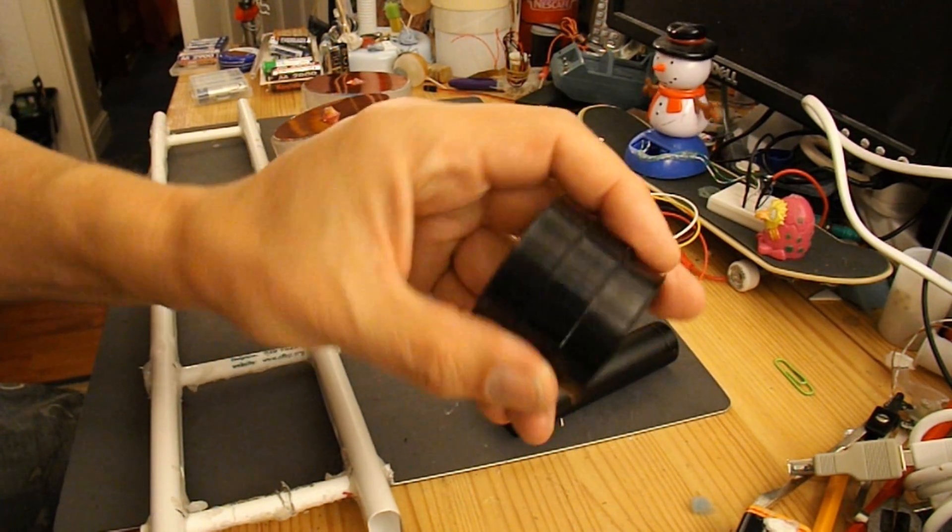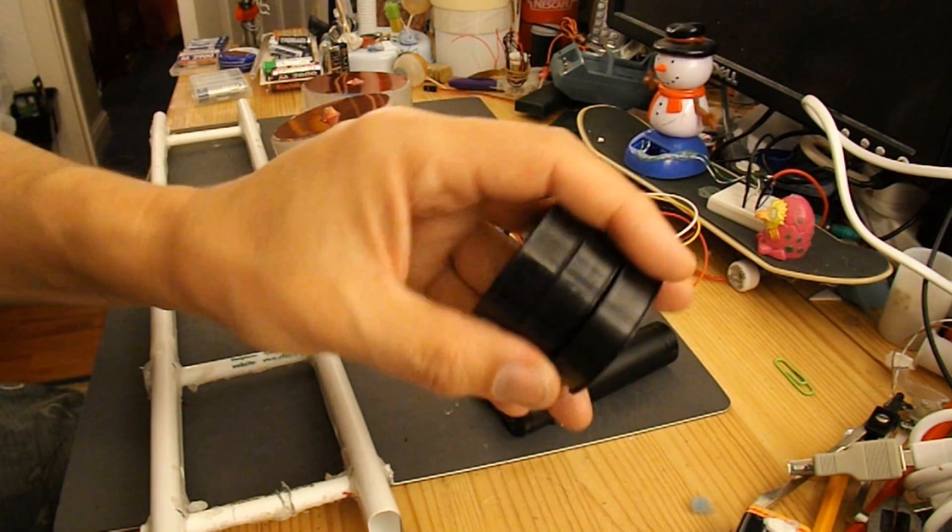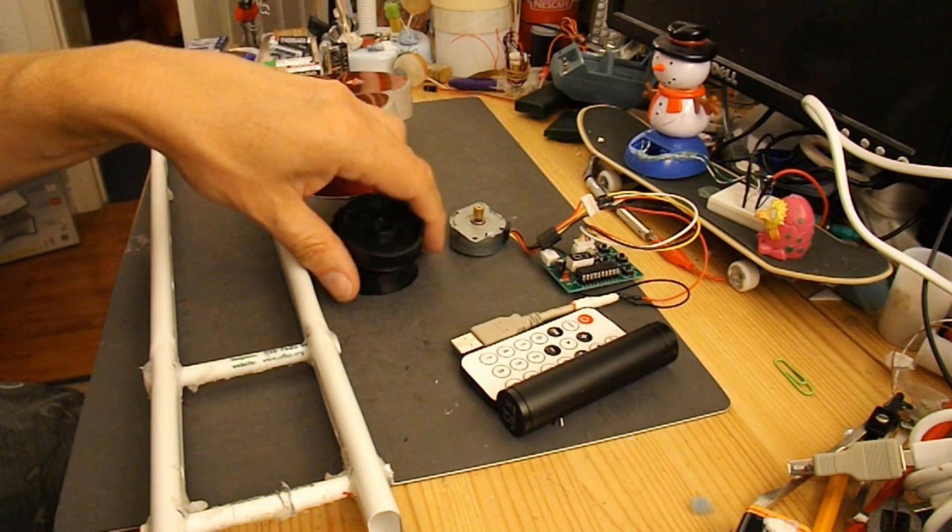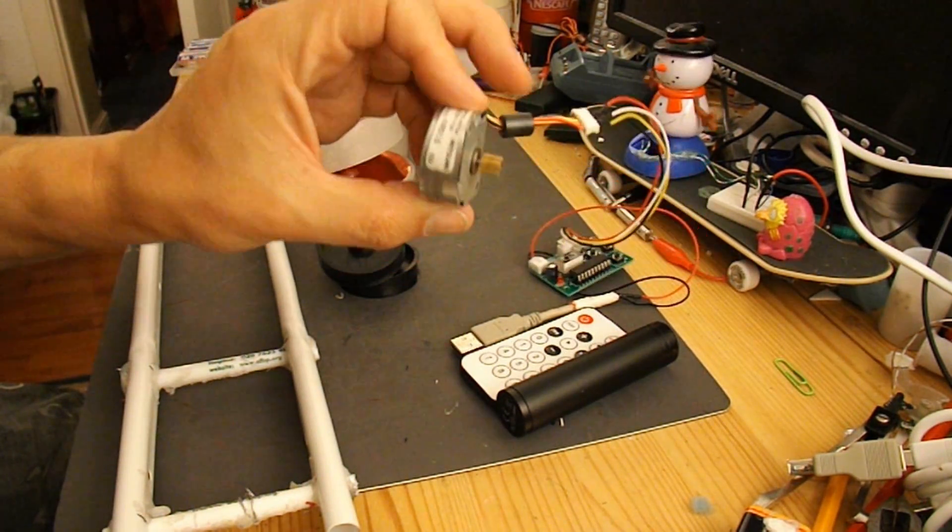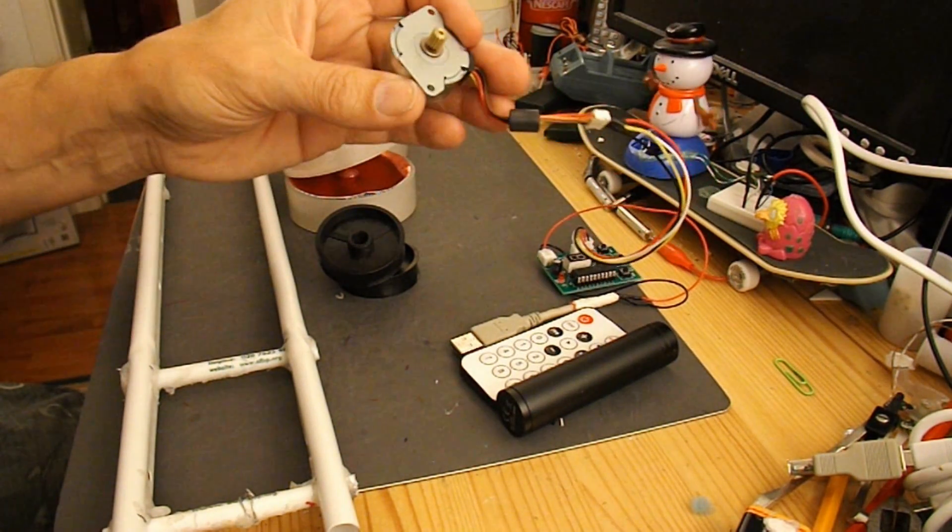For pulleys I'm going to use these, these are the rollers from a printer. The electric motor, this is a stepper motor that's come out of a printer I think at some time or other.